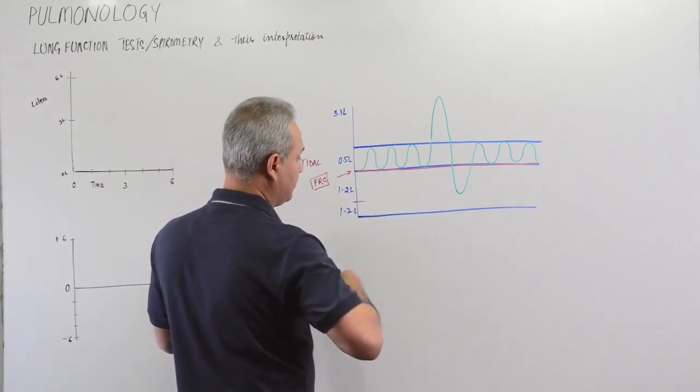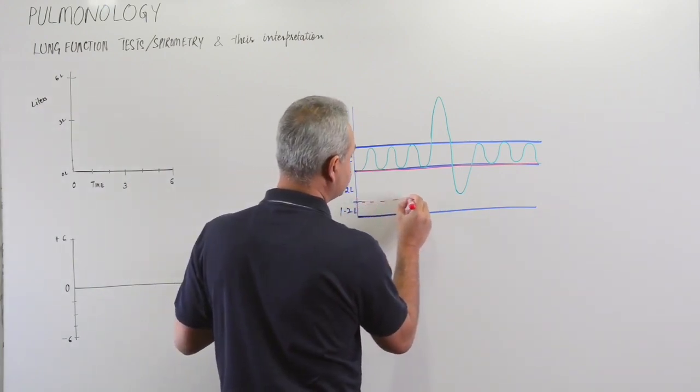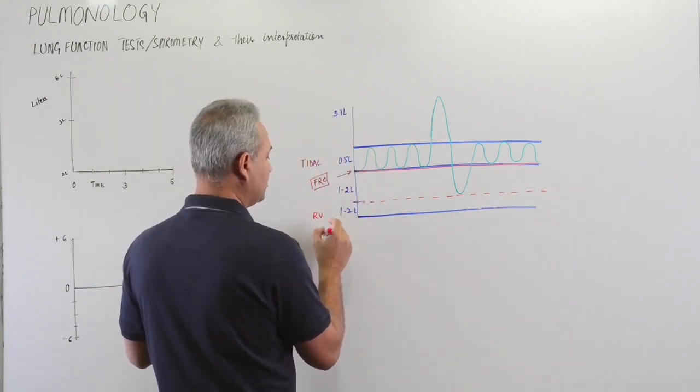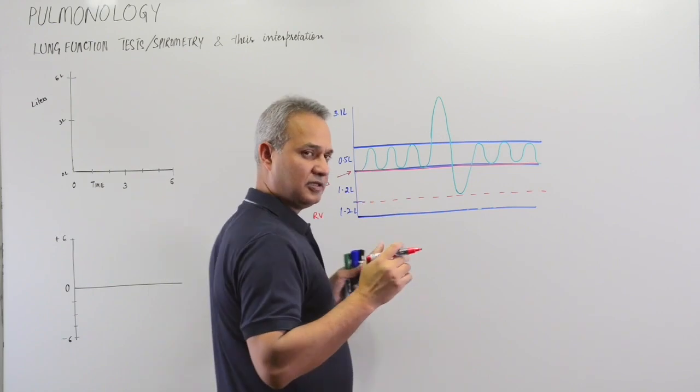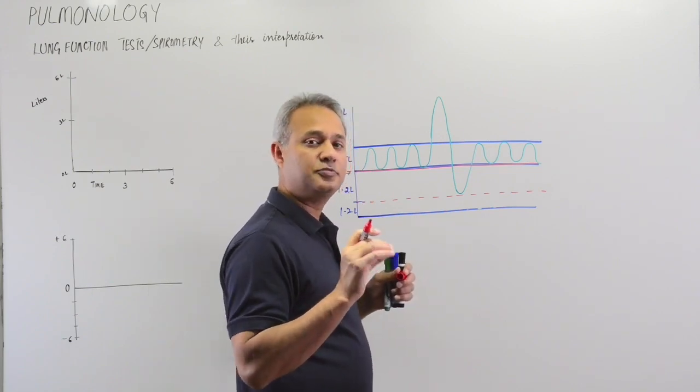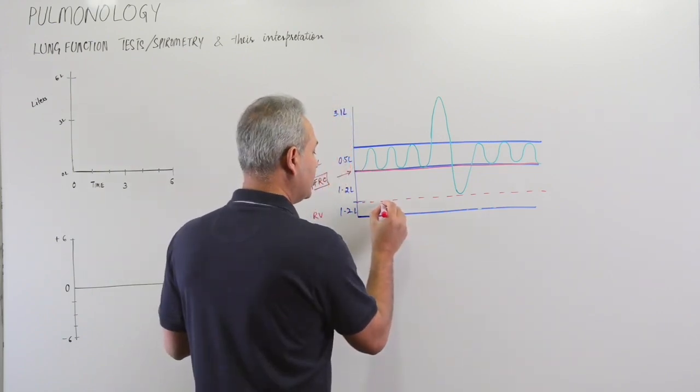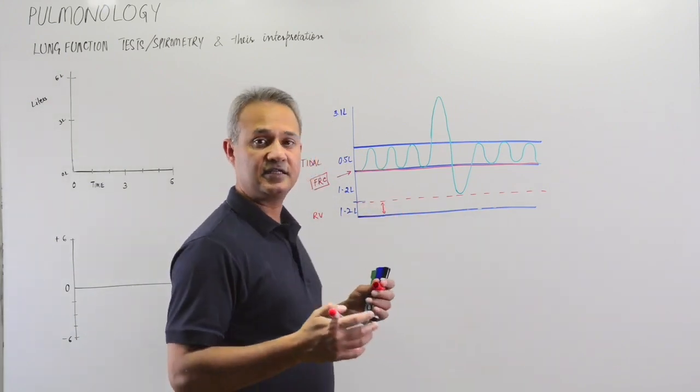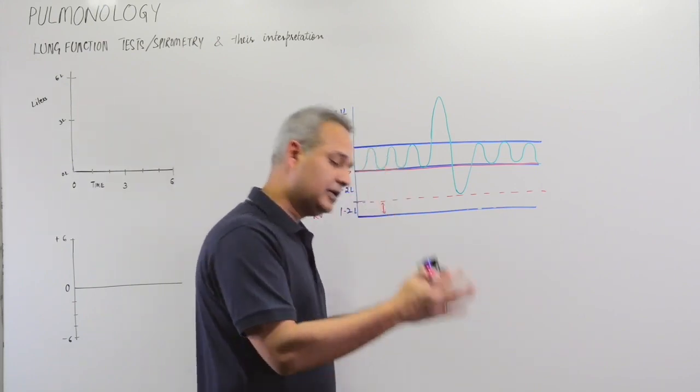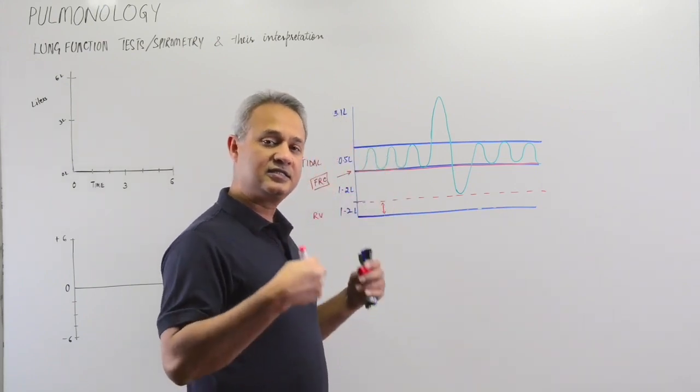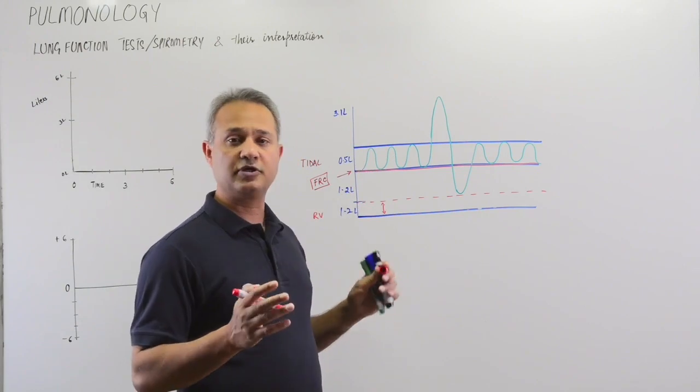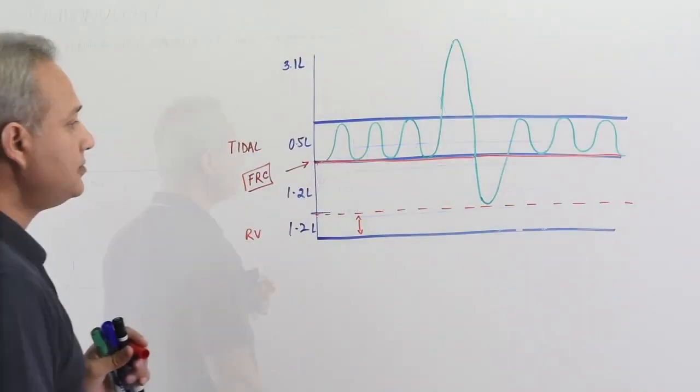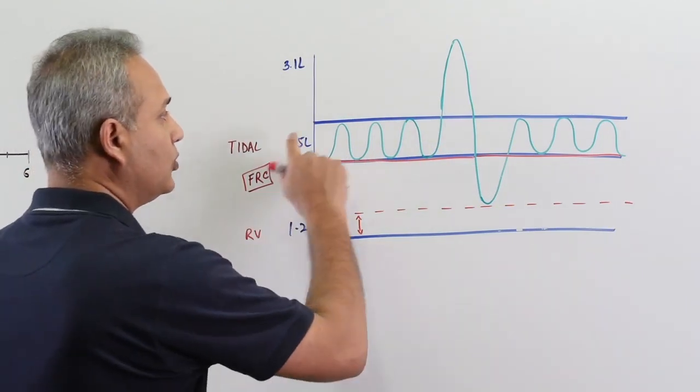Now another important volume is the residual volume - the volume that cannot really be measured. This is that volume that whatever you do is going to stay inside the lungs. So if I keep exhaling, still there is going to be about 1.2 liters of volume that stays in the lung.